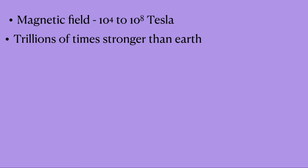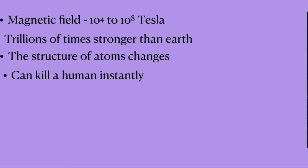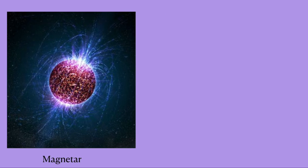The magnetic field of the neutron star is so strong that the structure of the atoms on the surface changes. This strong magnetic field would instantly kill a human, only if anyone manages to get that near to a neutron star. There are neutron stars that have magnetic fields stronger than these normal neutron stars. These neutron stars are known as magnetars.